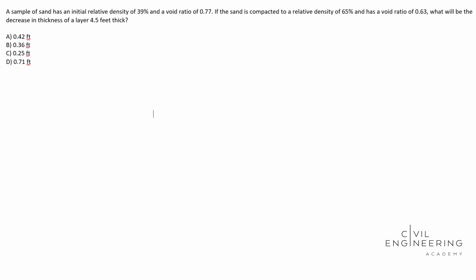It says a sample of sand has an initial relative density of 39% and a void ratio of 0.77. If the sand is compacted to a relative density of 65%, it has a void ratio of 0.63. What is the decrease in thickness of a layer 4.5 feet thick?